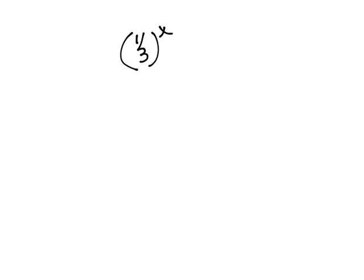Let's try another example using the one-to-one property for exponents. This time let's say we have one-third to the x is equal to 81. We need to rewrite one-third and 81 so that they are exponents to the same base.